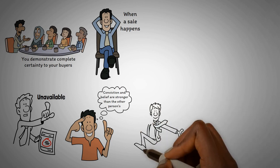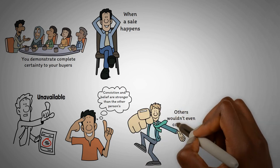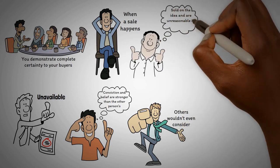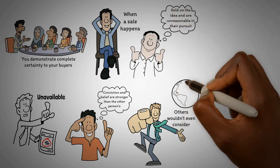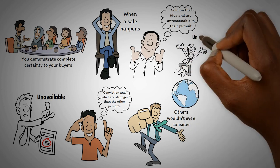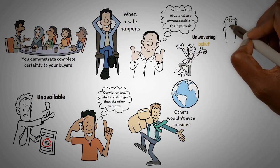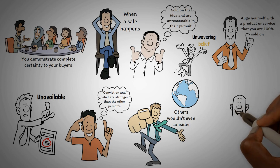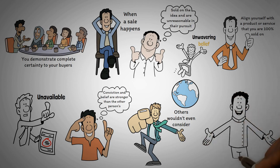Why do some people do things that others wouldn't even consider? It's because they are completely sold on the idea and are unreasonable in their pursuit. They succeed because of their unwavering belief. So if you want to be successful in sales, align yourself with a product or service that you are 100% sold on. The same principle applies to life in general.